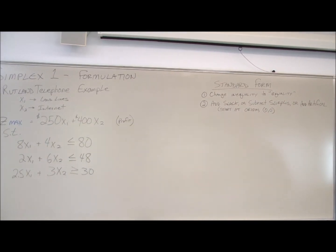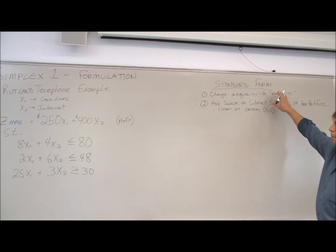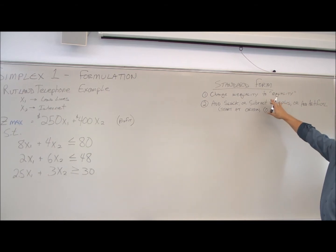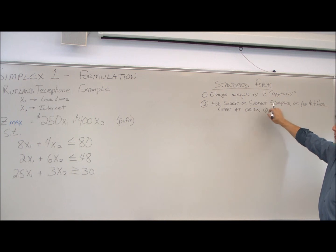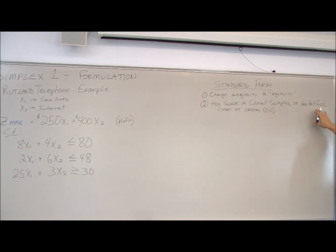For our Rutland telephone formulation example, we're going to put it into standard form. We change the inequalities to equalities, add slack, subtract surplus, or add artificial variables as needed. We're starting at zero, zero, at the origin, and we need things to be mathematically correct.